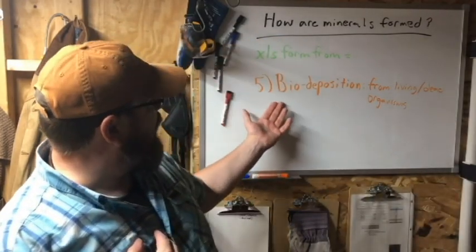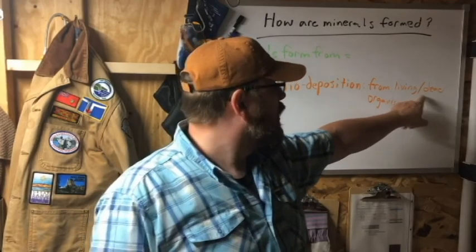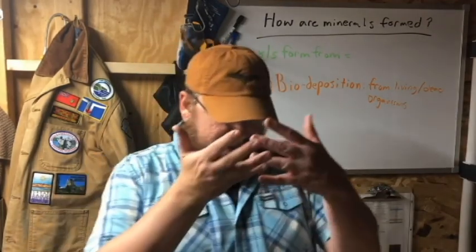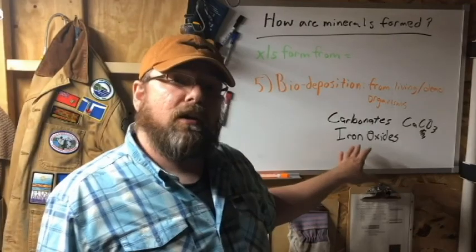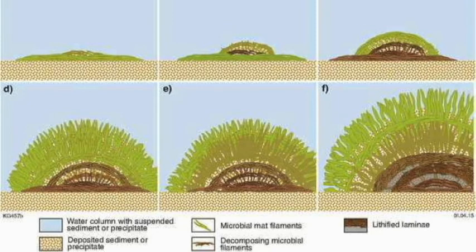The fifth and final way — unique to Earth as far as we know — that minerals form is a process called bio-deposition. These are minerals that form directly from living things still alive, like corals, or from dead things whose skeletons get deposited on the sea floor or lake floor. There are no real living organisms that deposit iron oxides anymore. One of the oldest organisms on Earth are called stromatolites — they're still alive today, mostly living in salty seawater or saline-rich lakes.